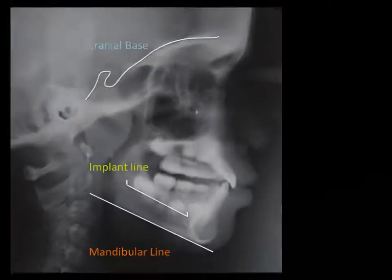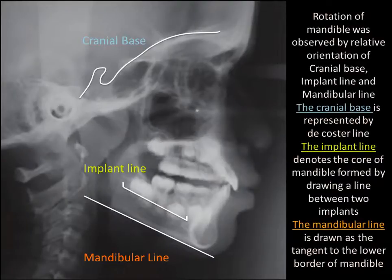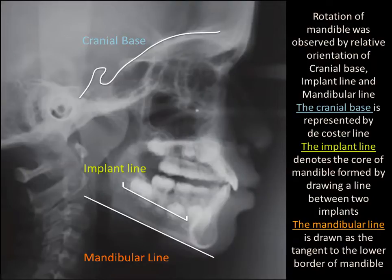Rotation of the mandible was observed by relative orientation of the cranial base, implant line, and mandibular line. The cranial base is represented by the decostal line. The implant line denotes the core of the mandible, formed by drawing a line between two implants. The mandibular line is drawn as the tangent to the lower border of the mandible.